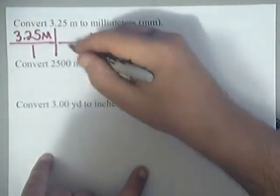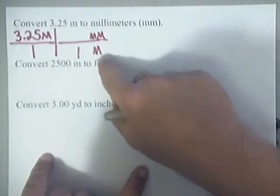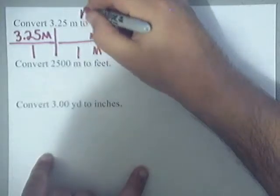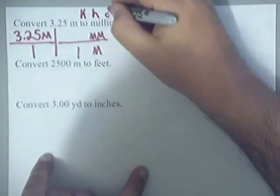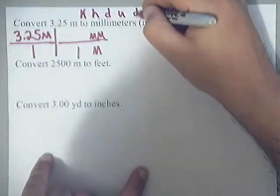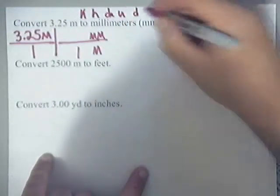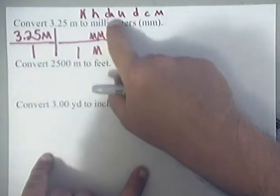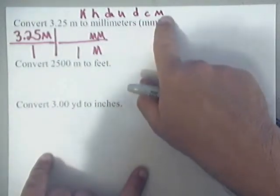If you remember, meters is three places away from millimeters, because remember the old saying, kangaroos hop down under drinking chocolate milk. Kilo, heca, deca, that's D-A. Units, desi, centi, milli.